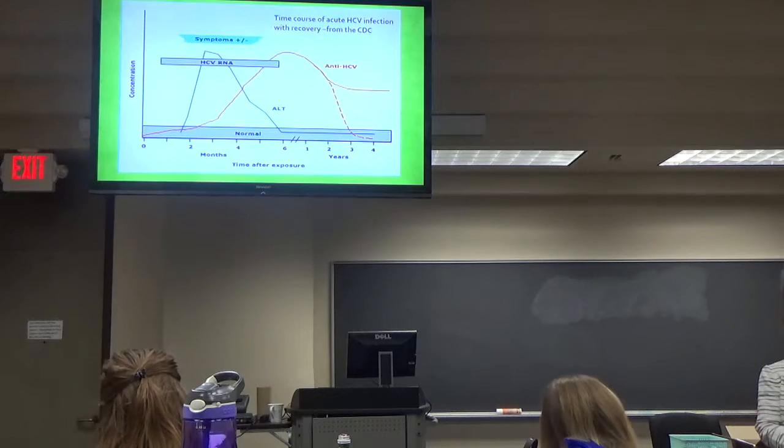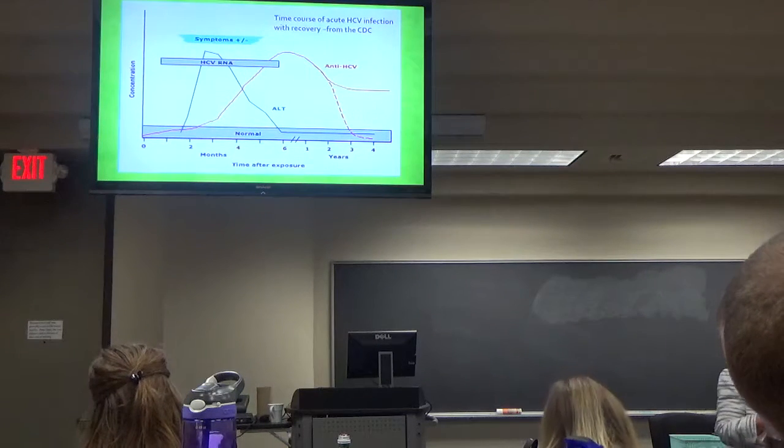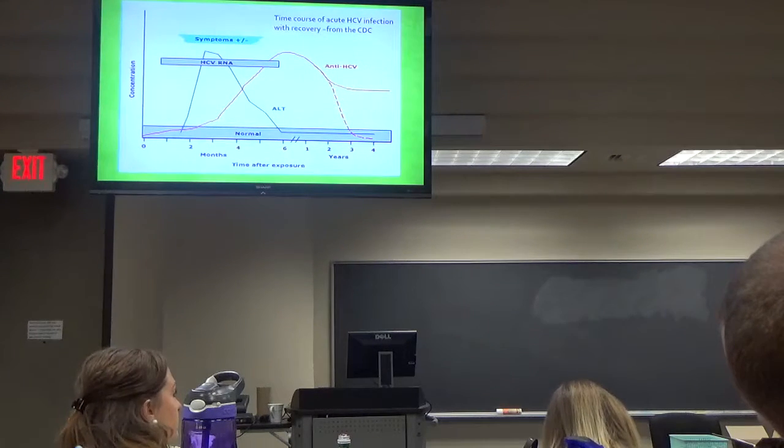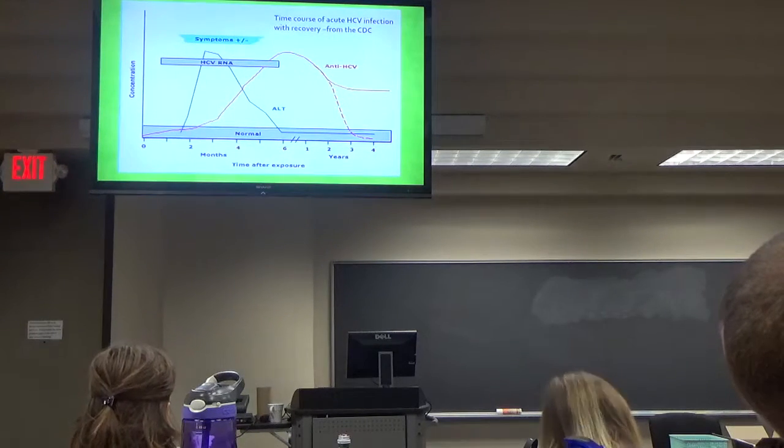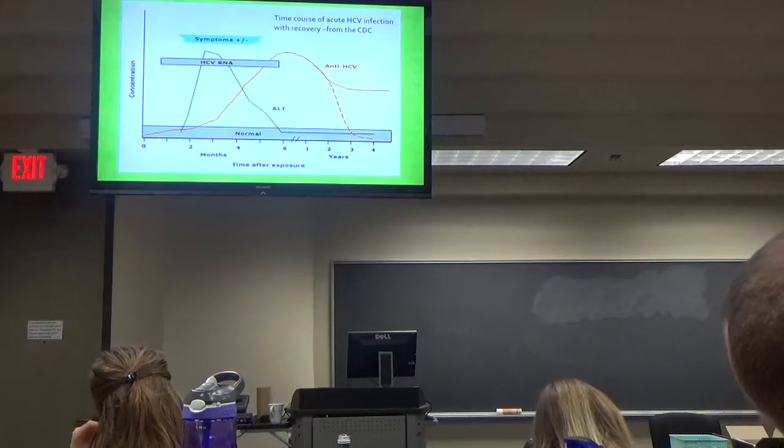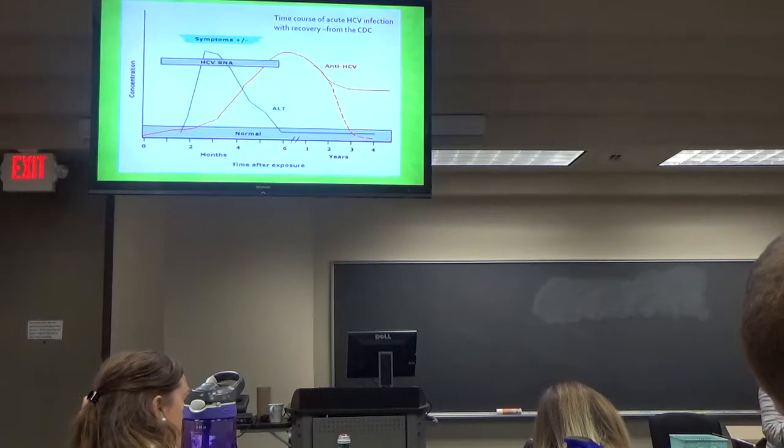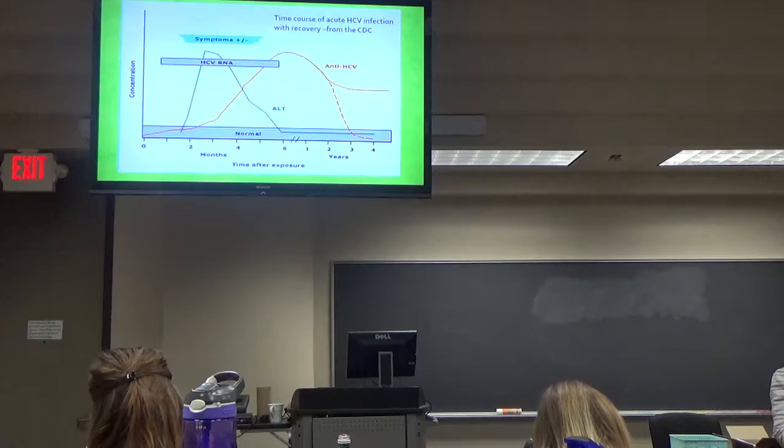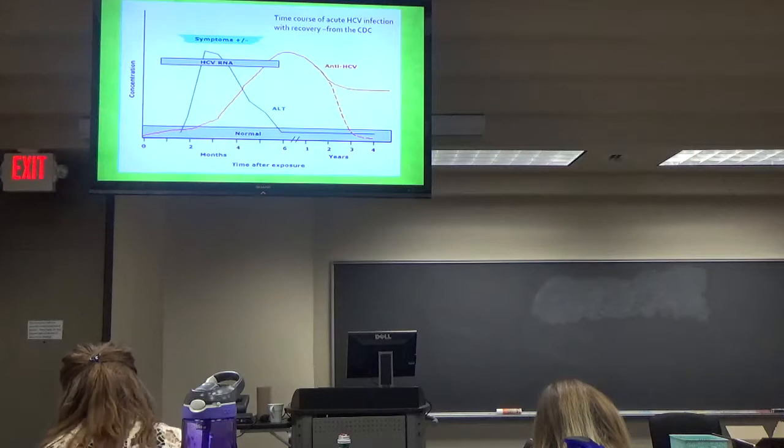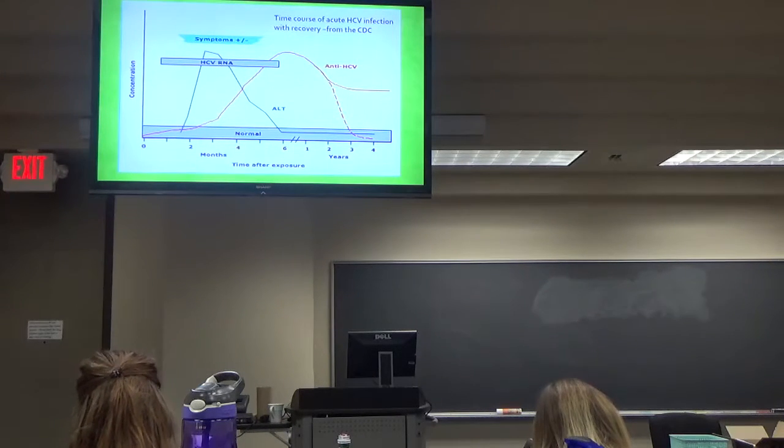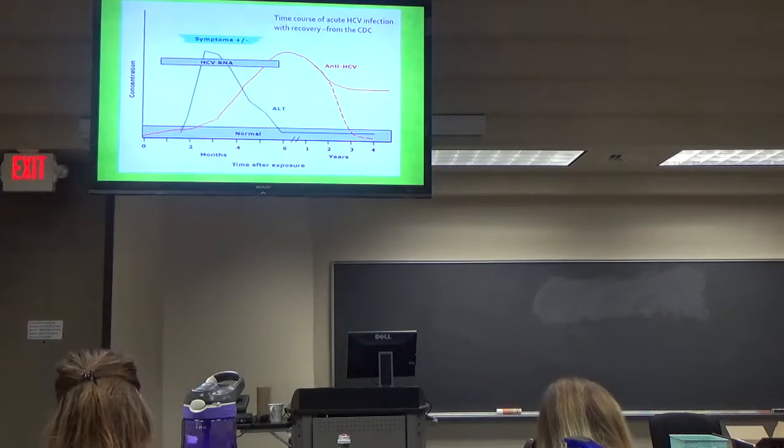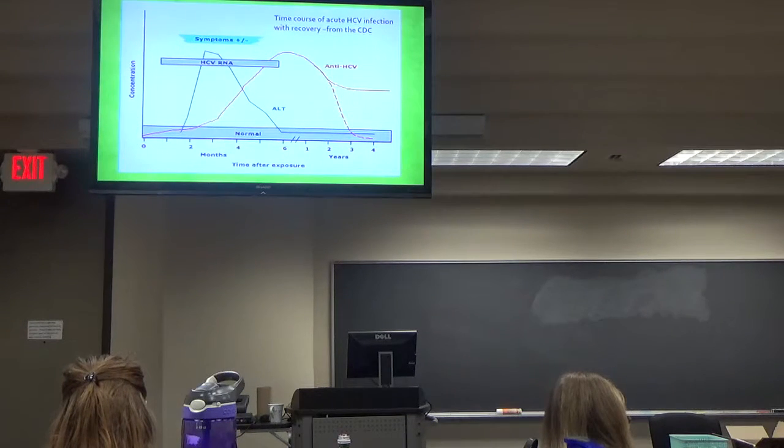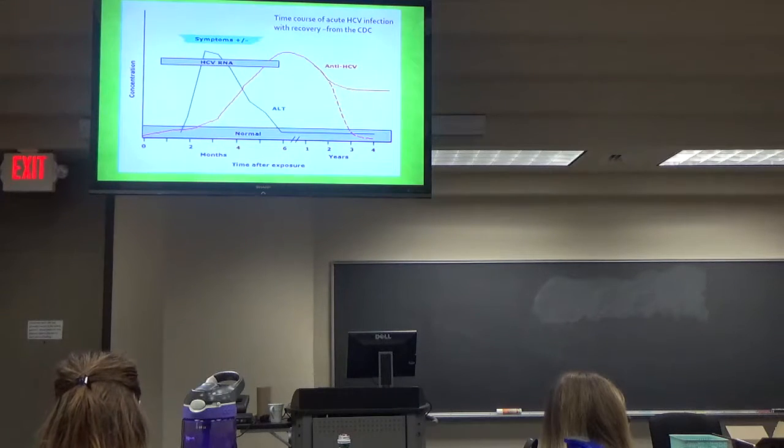Or it may be an acute infection depending on how high that RNA titer comes down. If the patient did not have an RNA or an antibody test in the last six months, then you're going to look for the risk of a high exposure. High exposure risk. So what would that be? You've already told me some of them. You got stuck by somebody, you drew blood, and lo and behold, they have Hep C.